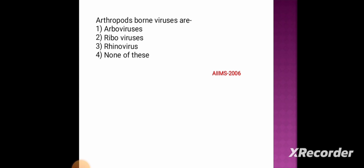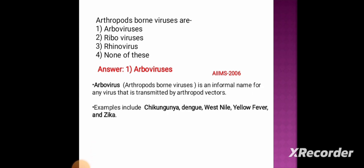Next: arthropod-borne viruses are — option 1: arboviruses, option 2: riboviruses, option 3: rhinoviruses, option 4: none of these. The correct answer is option 1, arboviruses. Arboviruses (arthropod-borne viruses) is an informal name for any virus transmitted by arthropod vectors. Examples include chikungunya, dengue, West Nile, yellow fever, and Zika.